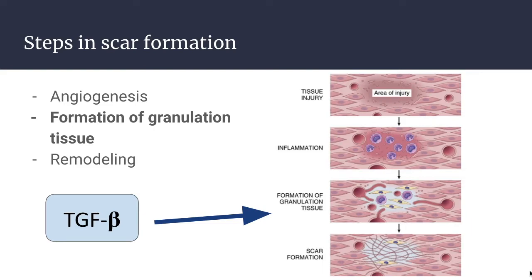Ultimately, granulation tissue evolves into a scar composed of largely inactive fibroblasts, dense collagen, fragments of elastic tissue, and a few other ECM components. As this scar matures, there is progressive vascular regression, which eventually transforms the highly vascularized granulation tissue into a pale avascular scar. Some of the fibroblasts within that tissue also acquire the features of smooth muscle cells, including the presence of actin filaments, and become called myofibroblasts, which helps contribute to the contraction of the scar over time.